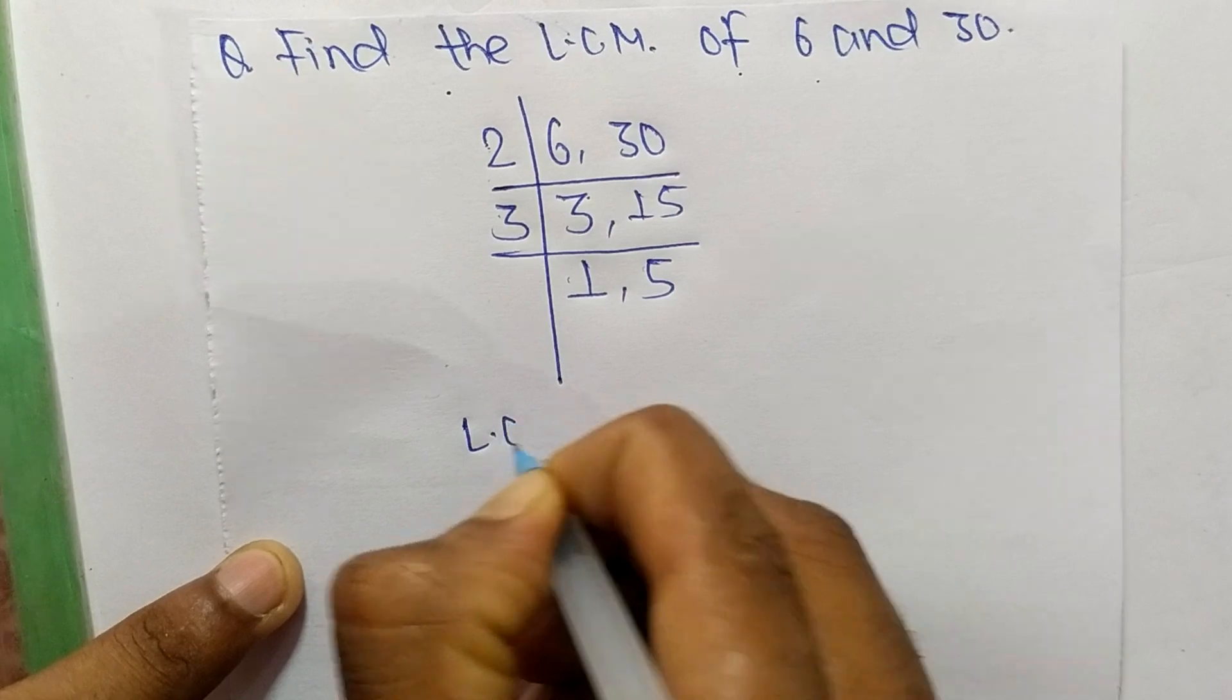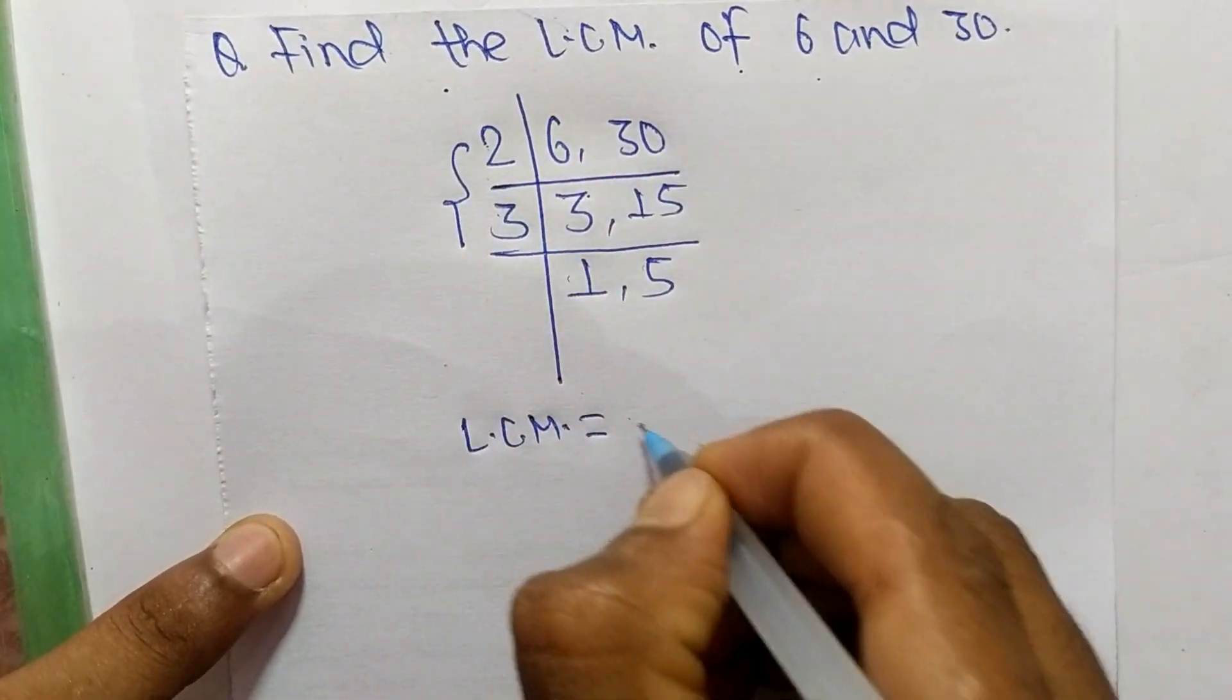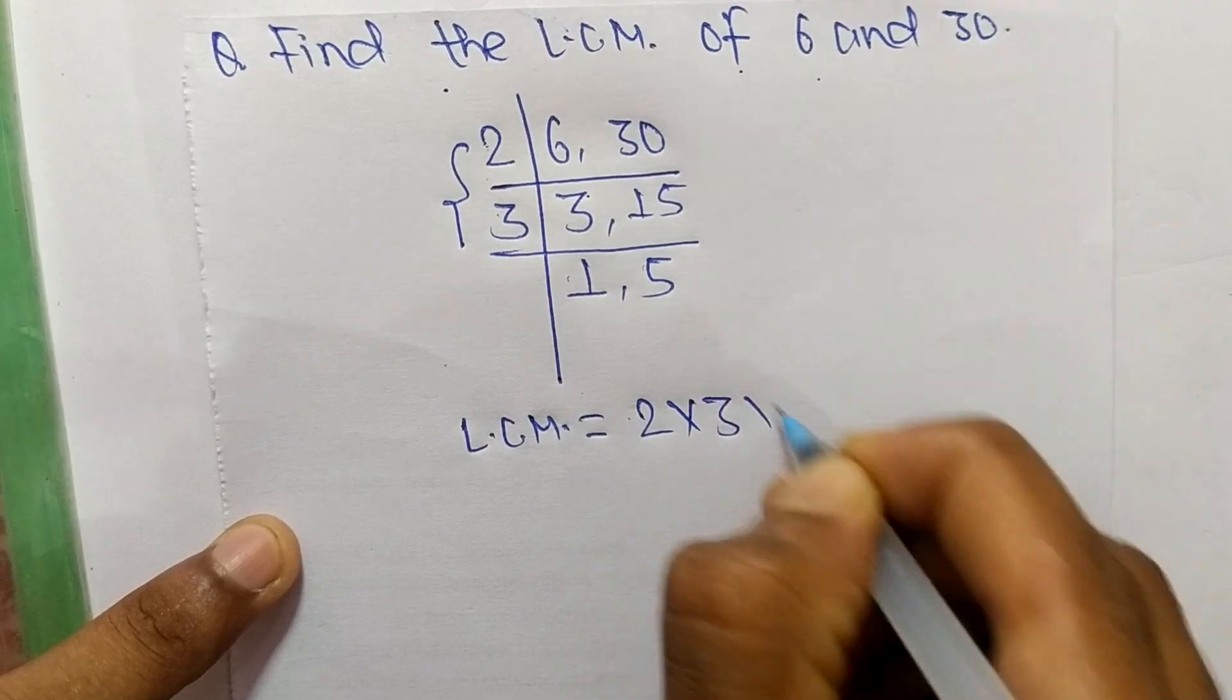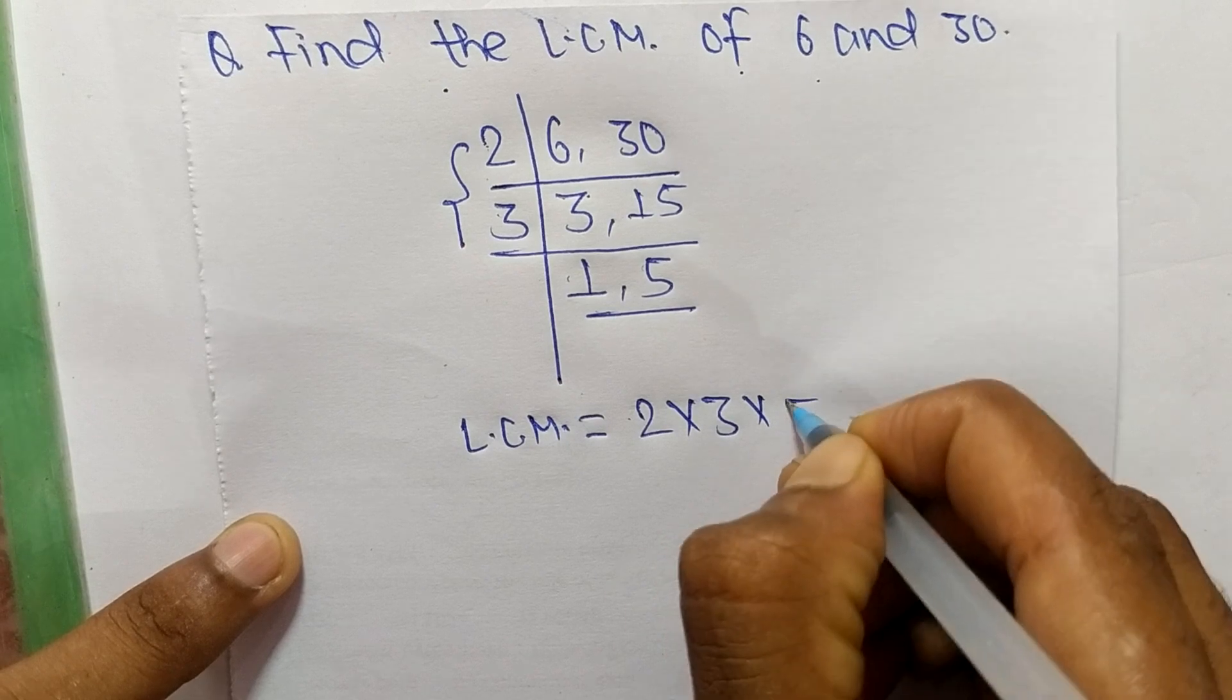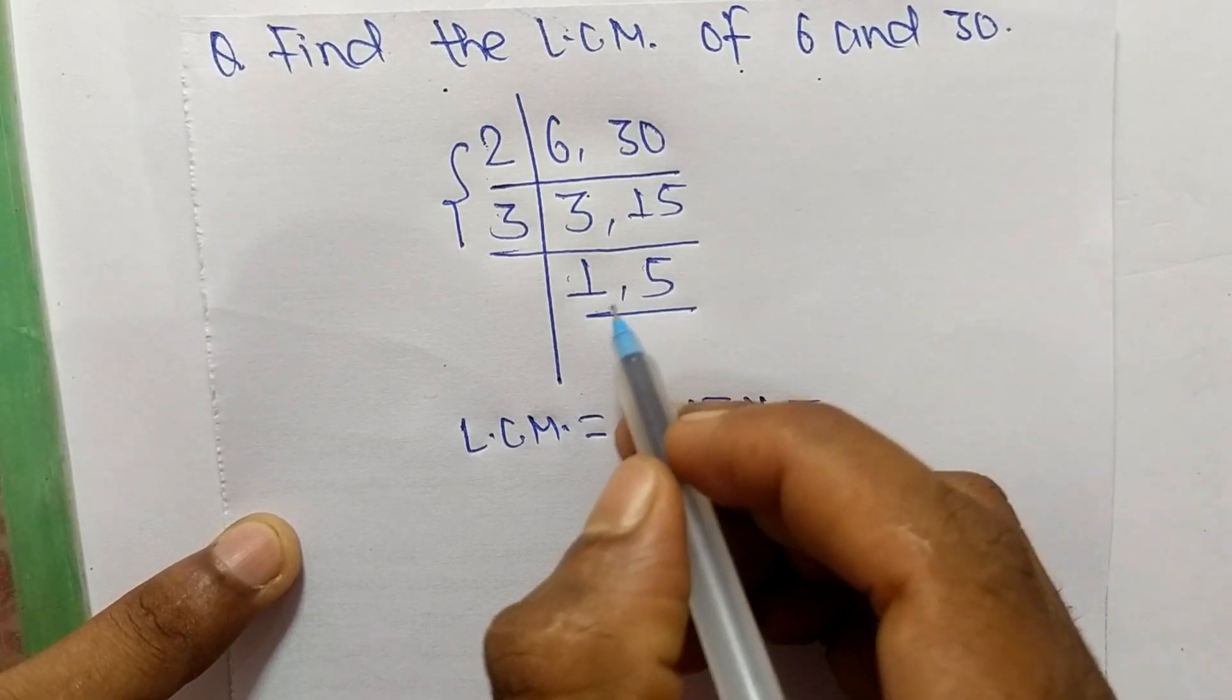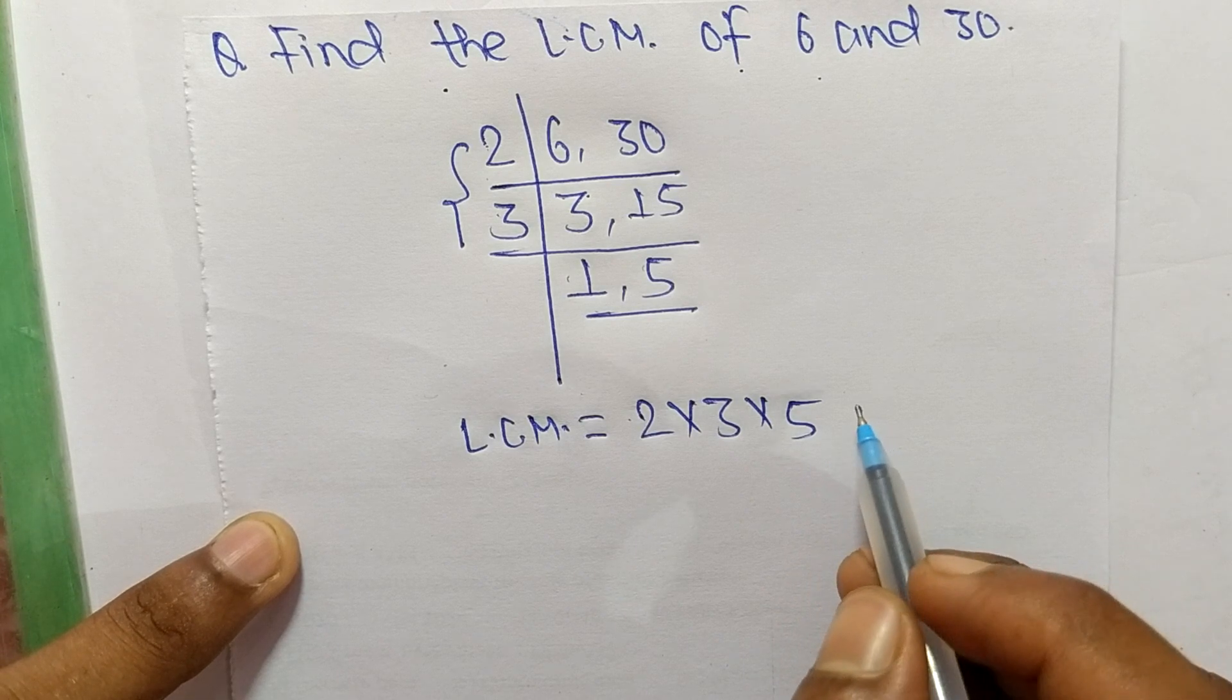The LCM equals 2 times 3 from the divisors, and from the remainders we have 1 and 5. We take only 5 and neglect 1, because multiplying any number by 1 gives the same result.